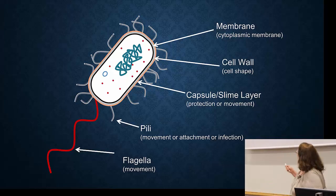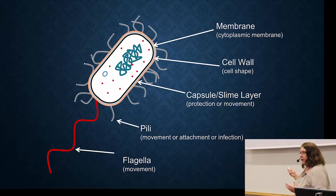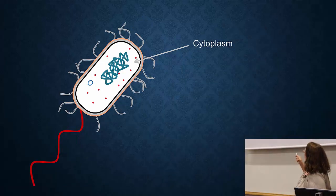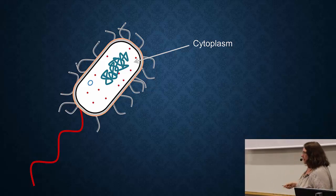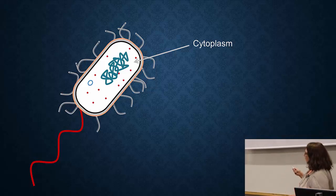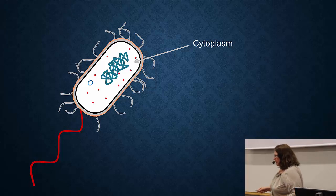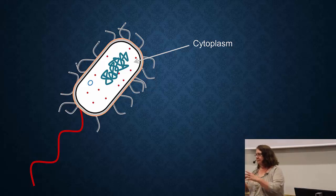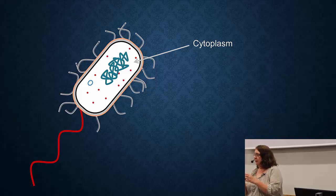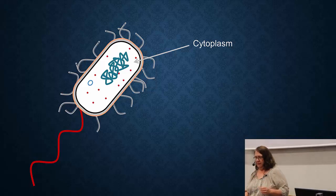Now I've talked about everything starting from the outside. Now I want to talk about the inside. Everything inside is called the cytoplasm. The cytoplasm is not just a bowl full of water — it's more like a gel inside there. The cytoplasm includes all the proteins and everything that's inside the cell.